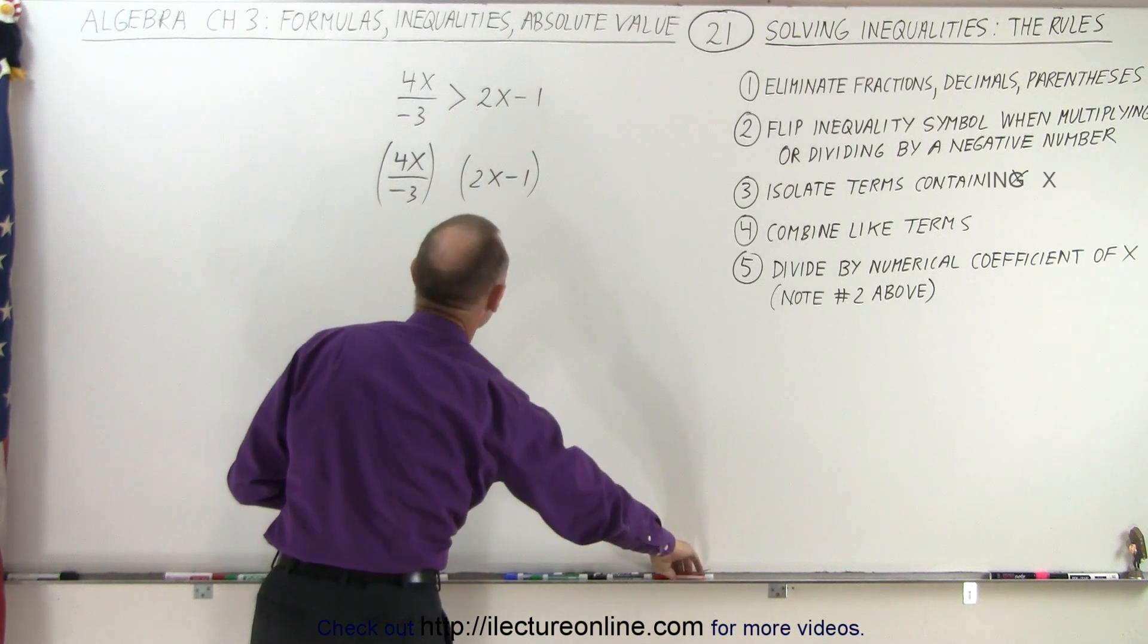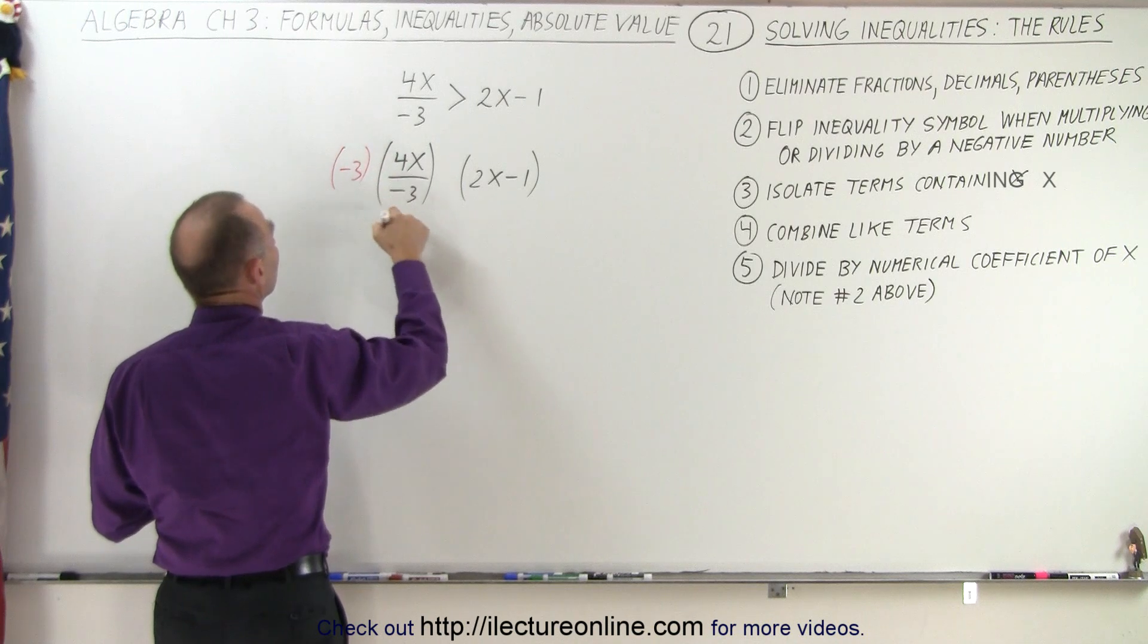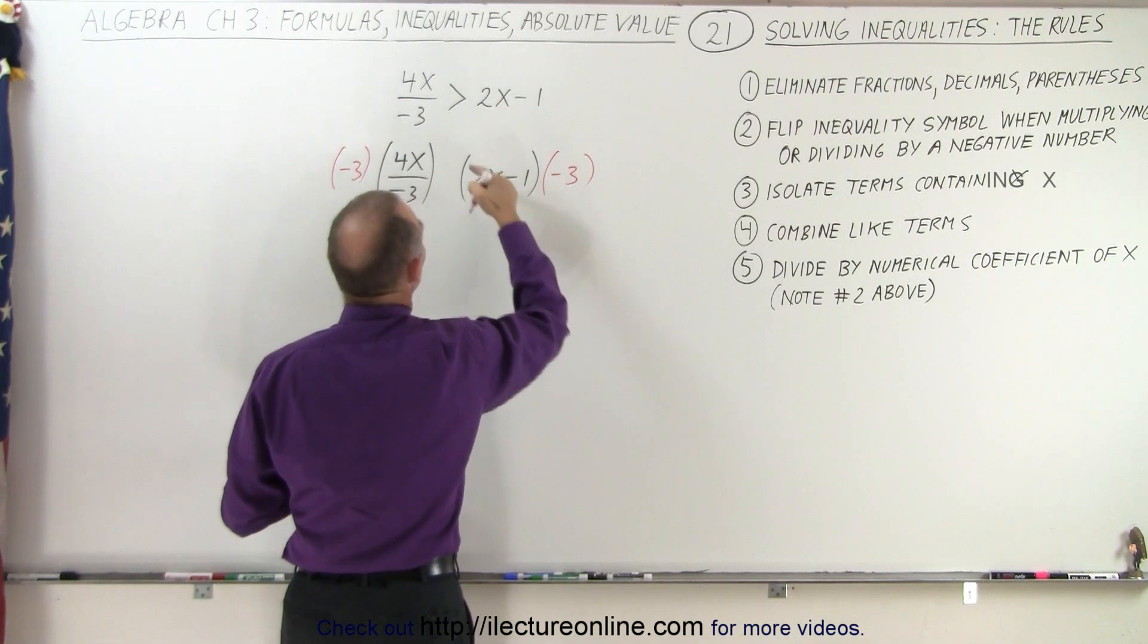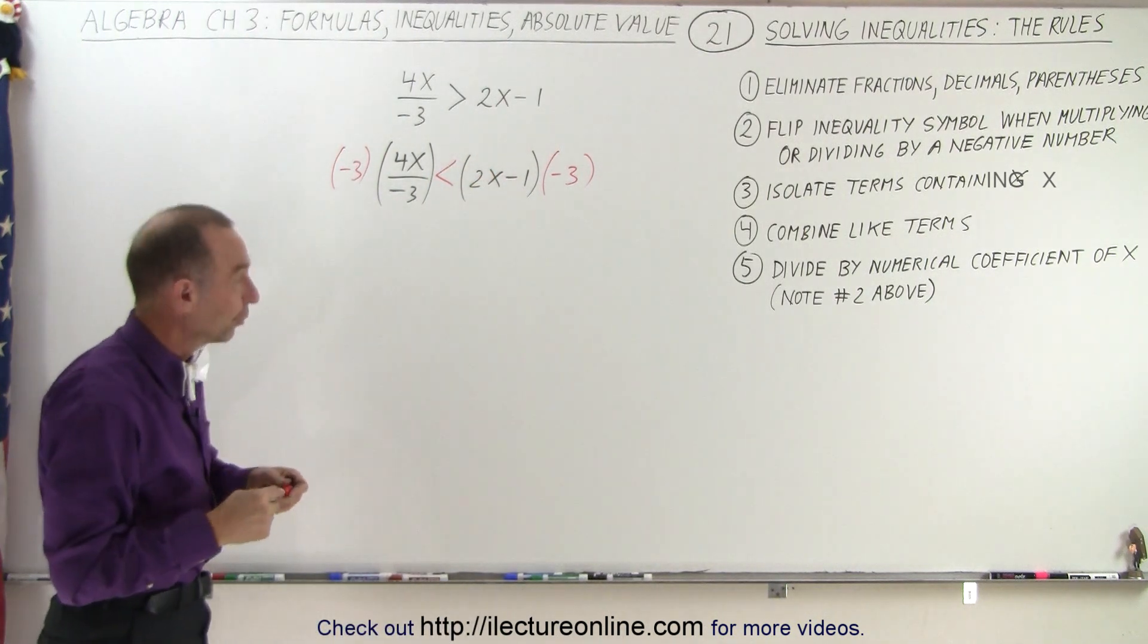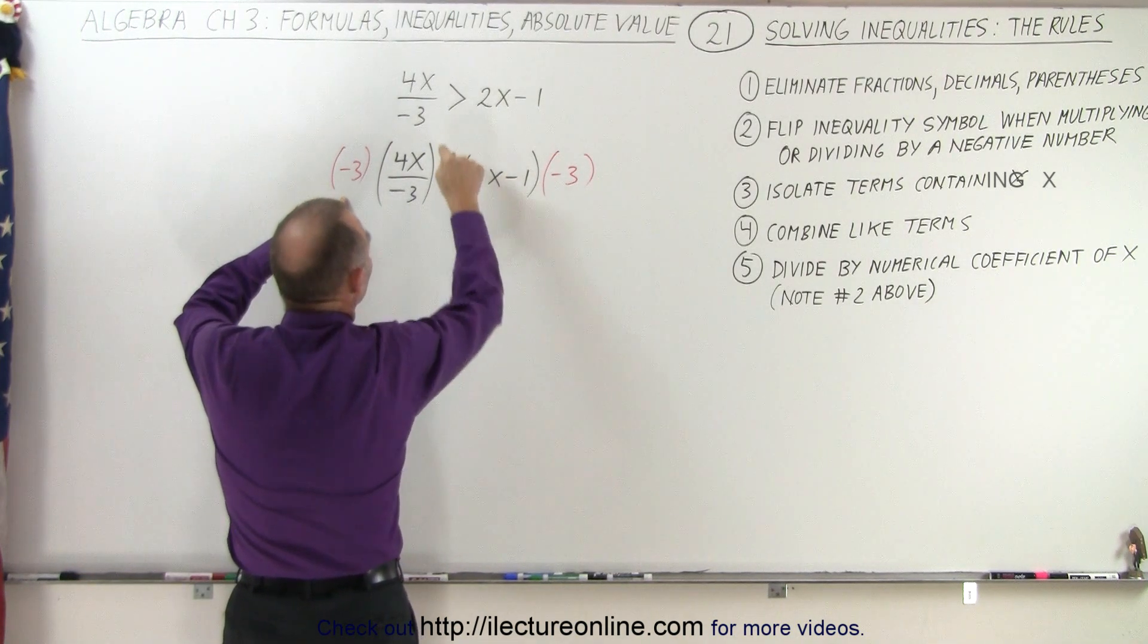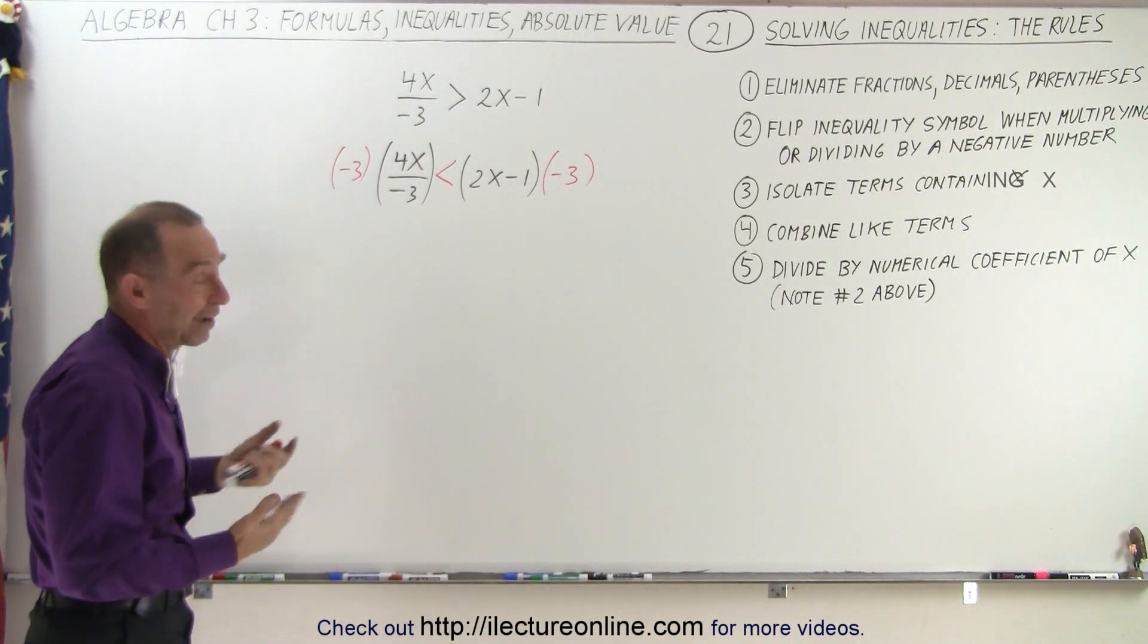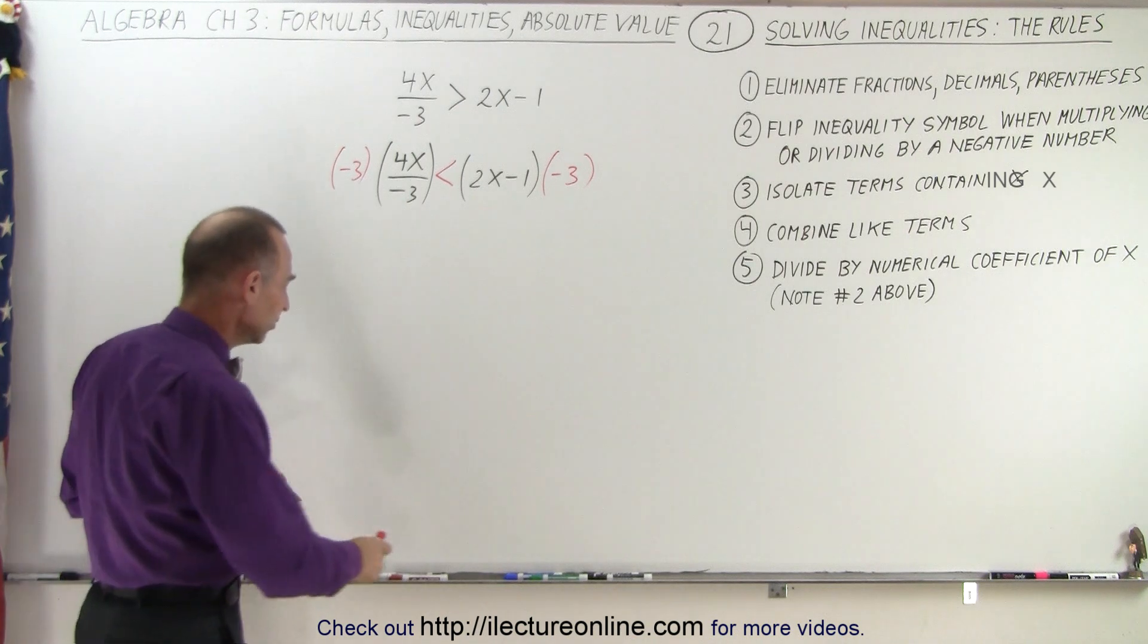But now, since I'm going to multiply by negative three on the left to get rid of the negative three in the denominator, I must do the same on the right. But then, of course, I have to flip the inequality symbol around. So to be technically correct, once I multiply both sides by a negative number, I must then at the same time also flip the inequality sign. Or if I divide by a negative number, same thing. So now I can go ahead and continue with the problem.